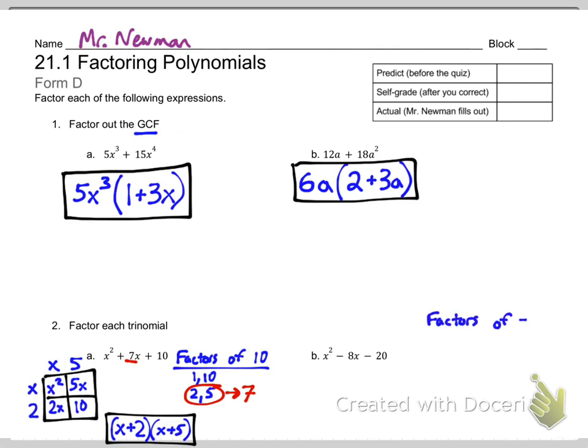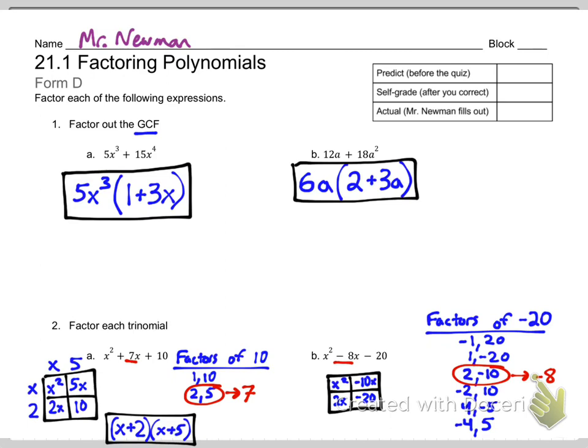For part B, we're asking for factors of negative 20, so one of them has to be negative. Here they are listed real quick. And once you find the correct one, notice we want to add to negative 8. So we see 2 and negative 10 are the correct pair. And when we do our box, 2x and negative 10x get put, and that's how the x's get split up. So the GCF along each row and each column gives us (x + 2)(x - 10). And that's the answer for that one.